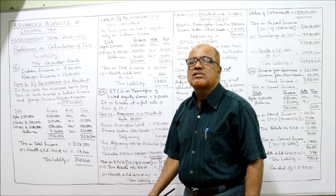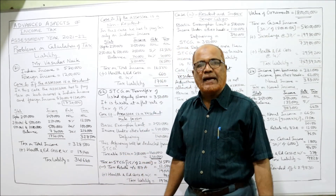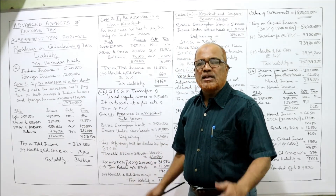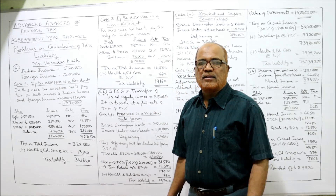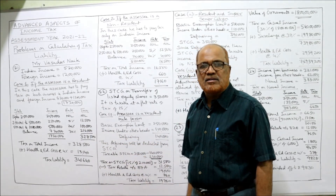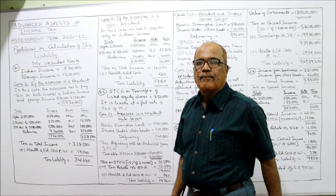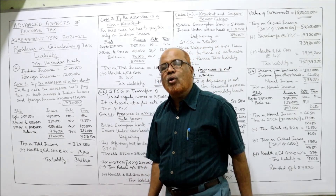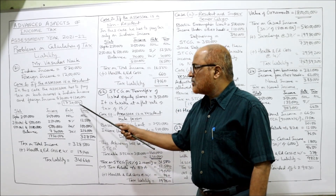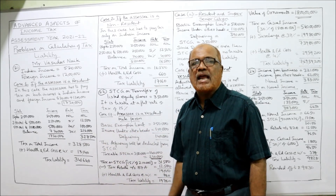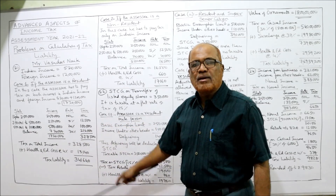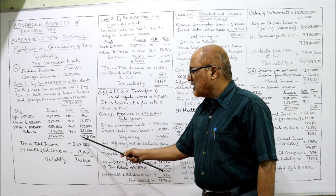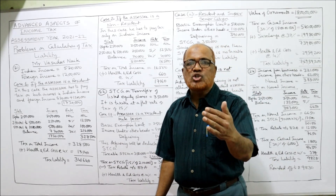Add up ₹5,20,000 plus ₹12,00,000 — total income is ₹17,20,000. On this ₹17,20,000 he has to pay tax. Applying the slabs: up to ₹2,50,000 — nil; ₹2,50,001 to ₹5,00,000 — ₹2,50,000 at 5% = ₹12,500; ₹5,00,001 to ₹10,00,000 — ₹5,00,000 at 20% = ₹1,00,000; balance over ₹10,00,000 — ₹7,20,000 at 30% = ₹2,16,000. Total tax is ₹3,28,500. Surcharge is not applicable as income is below ₹50,00,000.